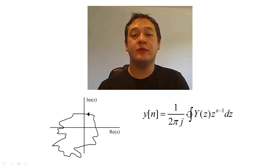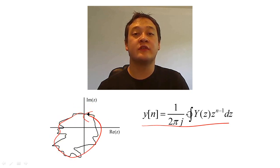The inverse Z-transform can be calculated with the following integral, which is an integral that is computed over a closed contour in a counterclockwise direction in the region of convergence.